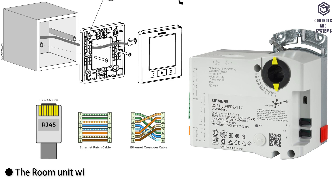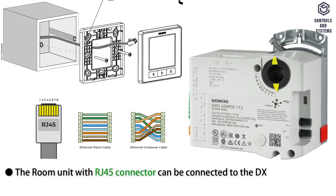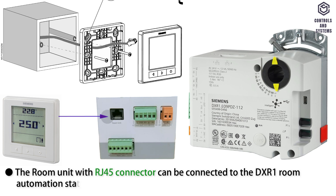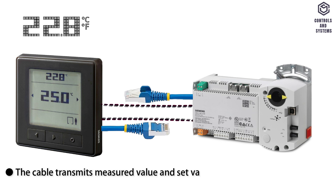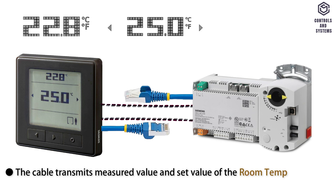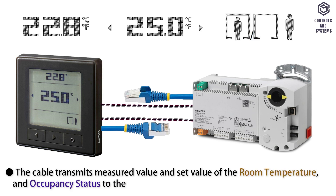The room unit with RJ45 connector can be connected to the DXR1 room automation stations via RJ45 cable. The cable transmits measured value and set value of the room temperature, and occupancy status to the room automation station.